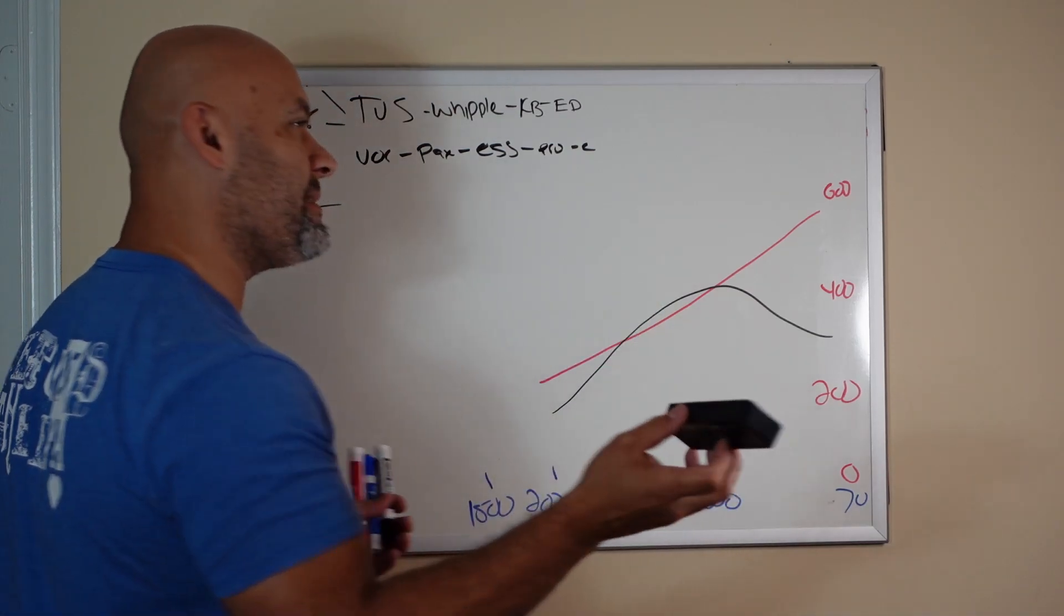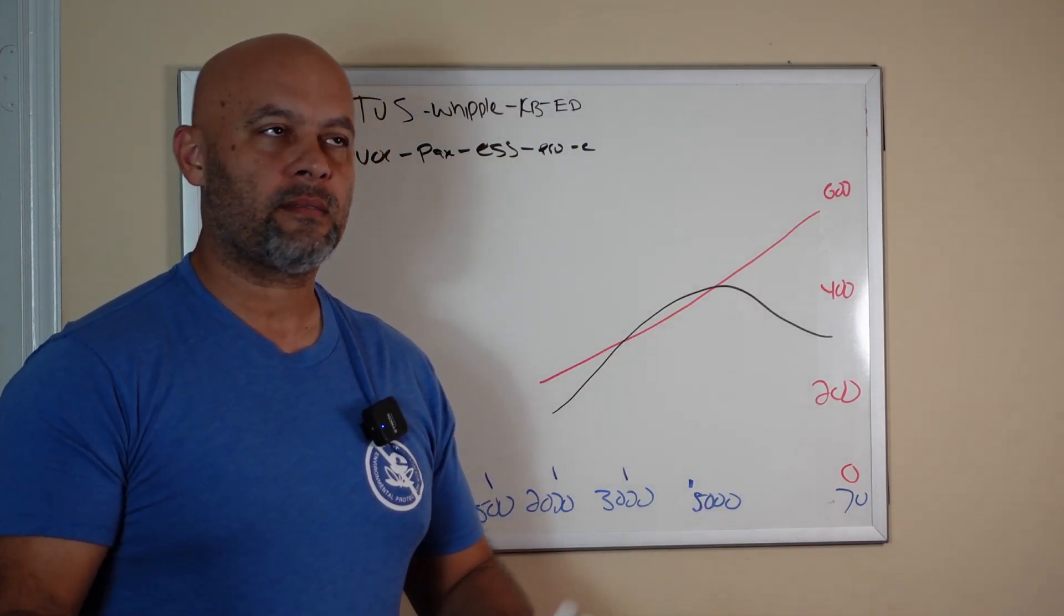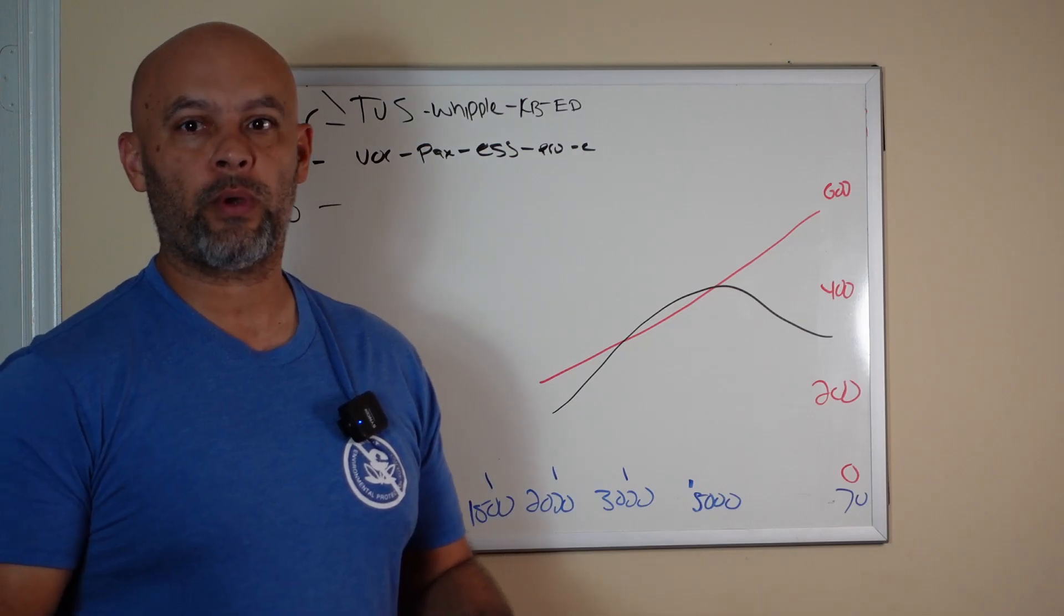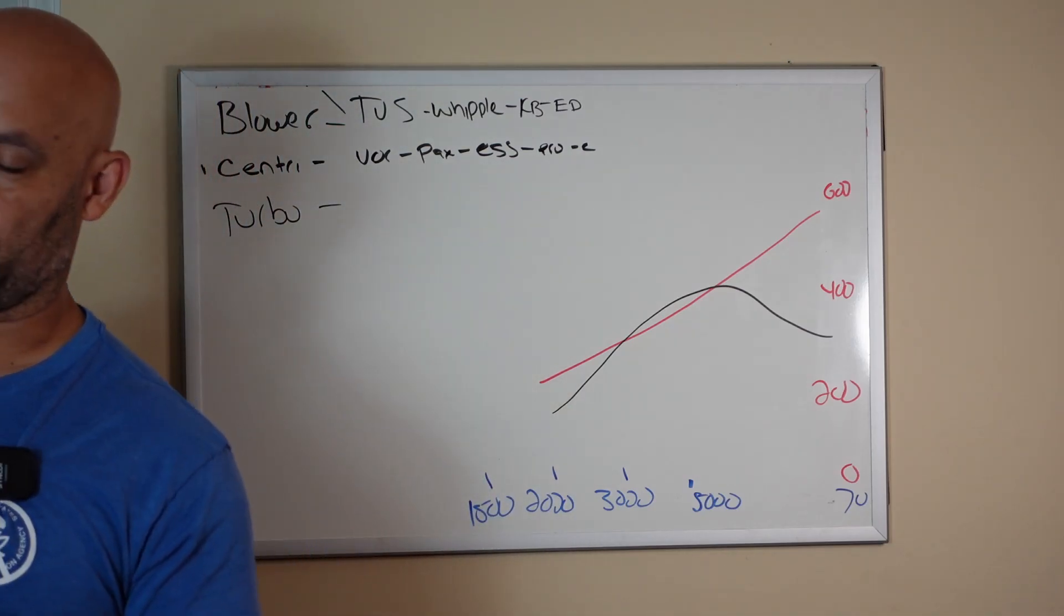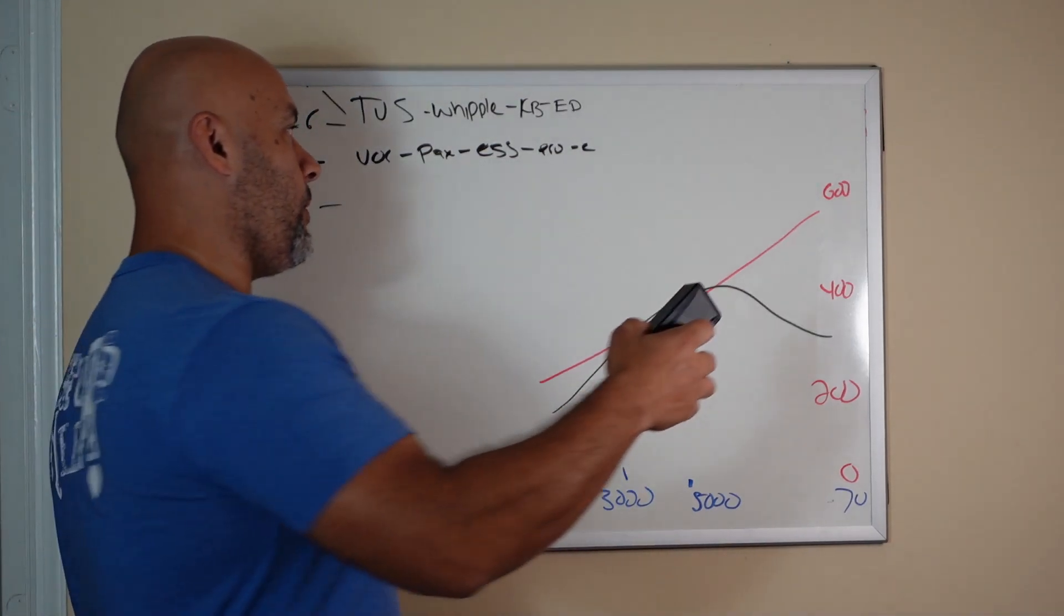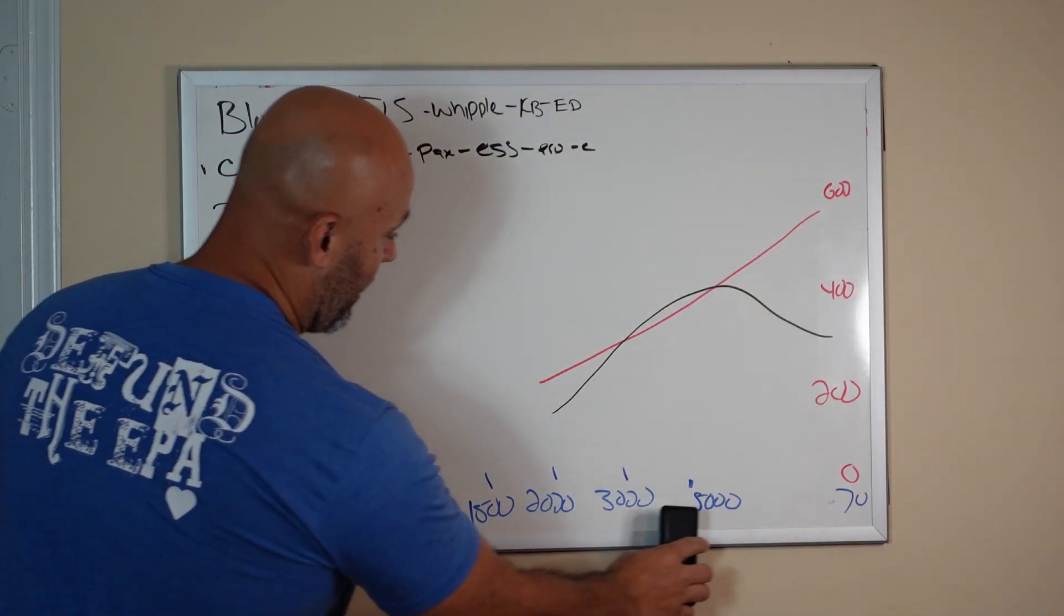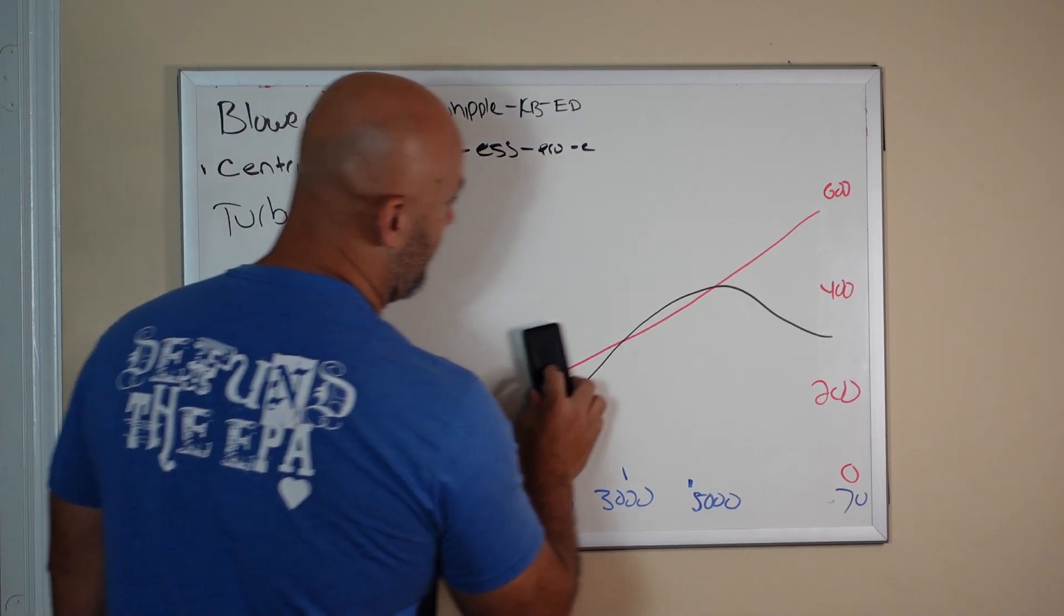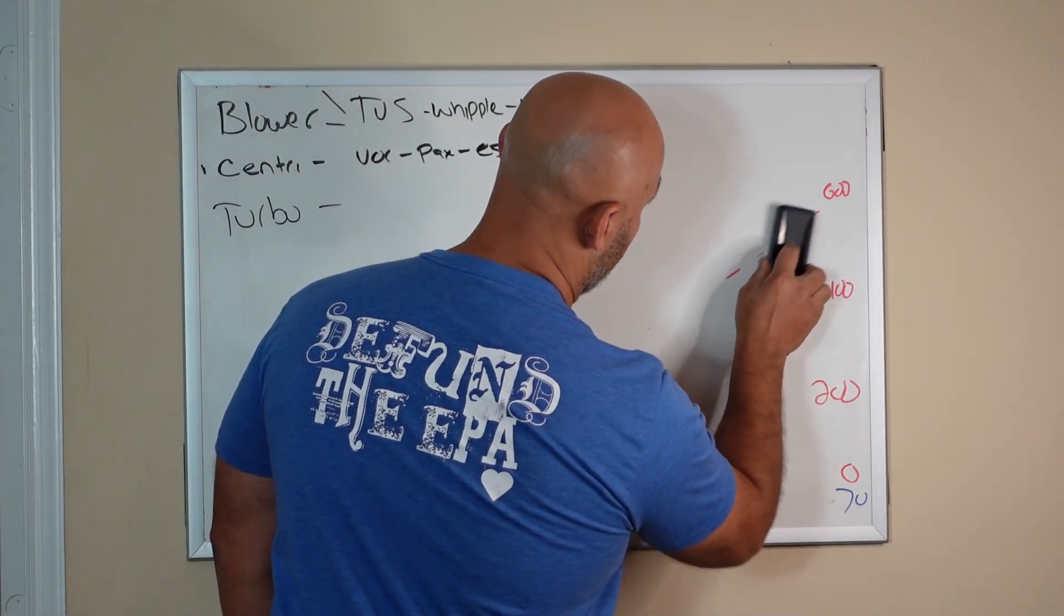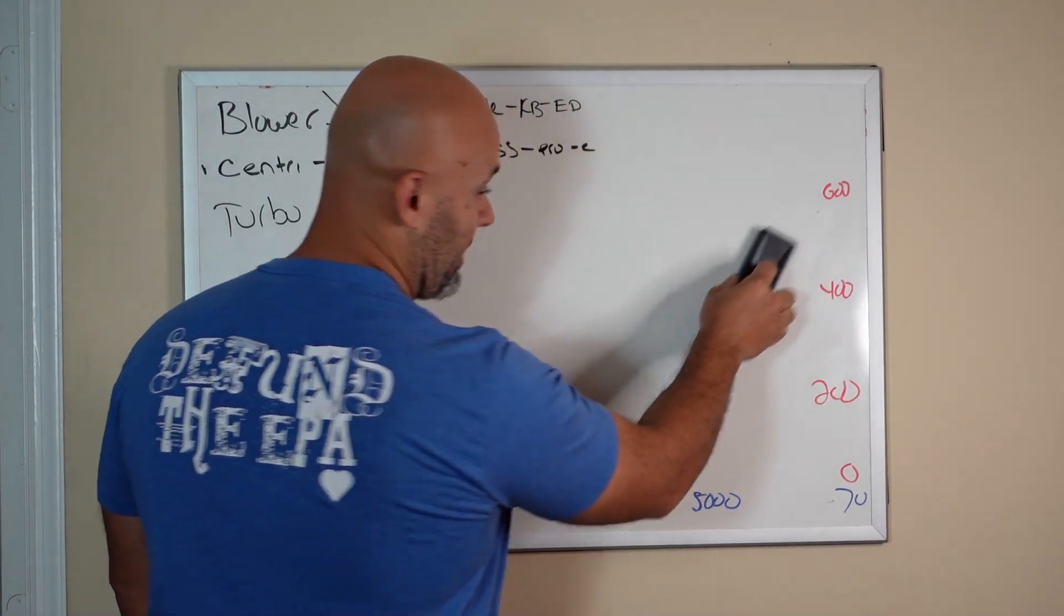Let's say you don't roll race, you don't road race, you don't do any of those things. So if you daily drive the car and you live under 4000 RPM, a centrifugal is not for you. It's just not for you.